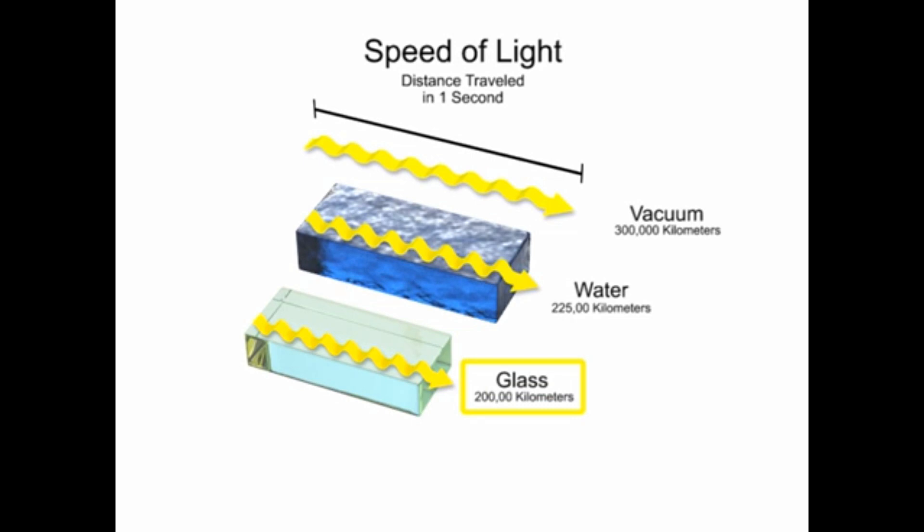Light travels very slowly through a diamond at about 41% of the speed of light, or 125,000 kilometers per second, which is less than half the speed of light in a vacuum.